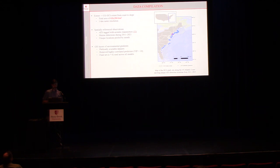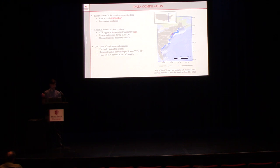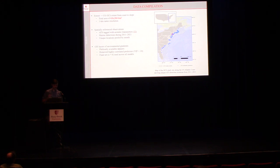The second part of data compilation is pulling together environmental gradients to correlate with these models. To keep things generalizable, I only looked at publicly available datasets. With modeling, I won't go into too much detail, but we ended up with a final set of just six predictors — a very small number to predict these models.